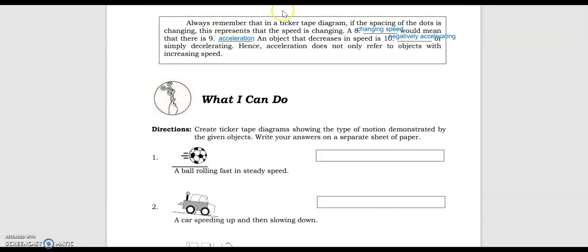The ticker tape diagram that starts with dots spaced farther apart and gets closer as you go indicates the object was slowing down. Always remember that if the spacing of the dots is changing, the speed is changing. A changing speed means there is acceleration. An object that decreases in speed is negatively accelerating, or simply decelerating. Hence, acceleration does not only refer to objects with increasing speed.